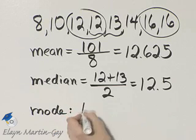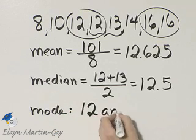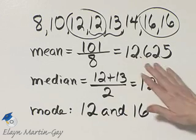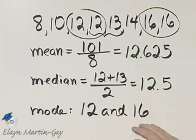So we have two modes. 12 is a mode and 16 is a mode. So there's our mean, our median, and our mode.